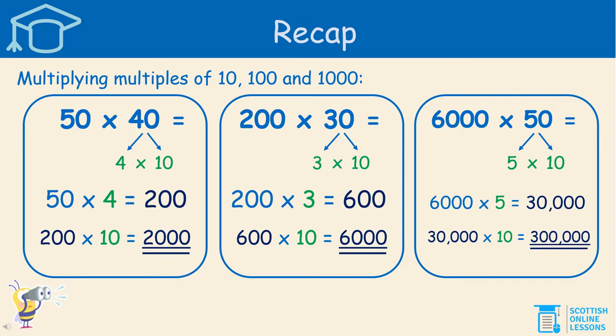The middle box: 200 times 30, a multiple of 100 times a multiple of 10. Again, we're splitting up that multiple of 10 — so 30 becomes 3 times 10. We can do 200 times 3, which equals 600. Then 600 times 10 equals 6000. And the last box on the right: 6000 times 50, a multiple of 1000 multiplied by a multiple of 10. So 50 has been changed to 5 times 10. 6000 times 5 is 30,000. 30,000 times 10 is 300,000. That's a little recap, and it's going to be useful in our learning in this lesson today.